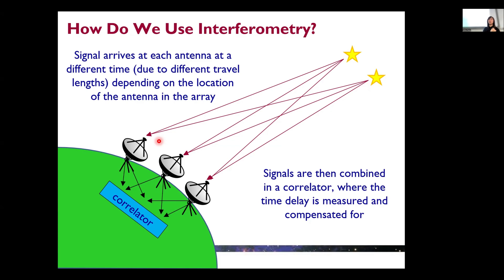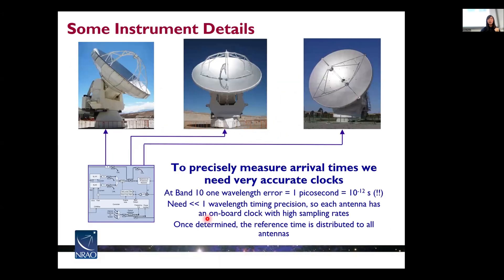There are two components to consider: the same signal arriving at different antennas at different times, and different signals arriving at the same antenna at different times due to positional variations. We need to precisely measure these differences in arrival times, so we need very accurate clocks in these telescopes — accurate to way better than one wavelength we are observing. For example, the highest frequency band in ALMA, Band 10, one wavelength error corresponds to one pico-second. So we actually need clocks accurate to one pico-second.